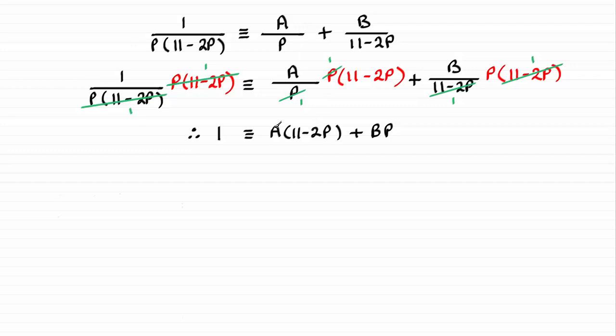Anyway, we've got to work out these constants A and B next, and we select suitable values for P to make each of these terms zero. That's the best method we could use here. And what I'm going to do is set P equal to zero first of all, and that will take out that term.